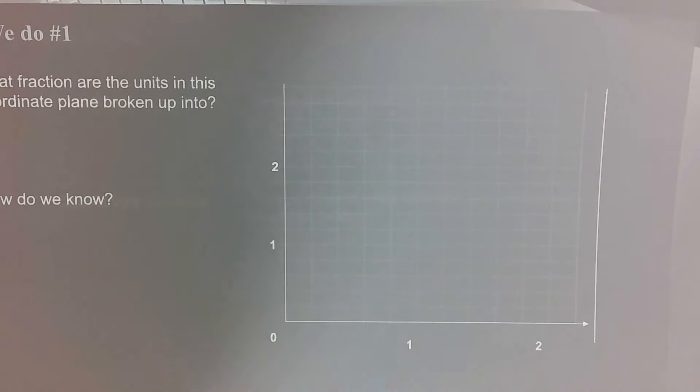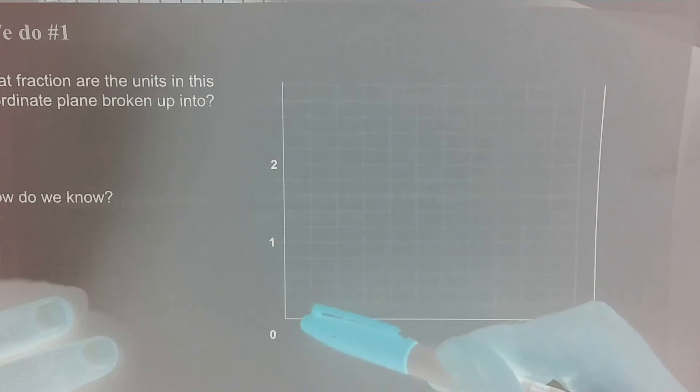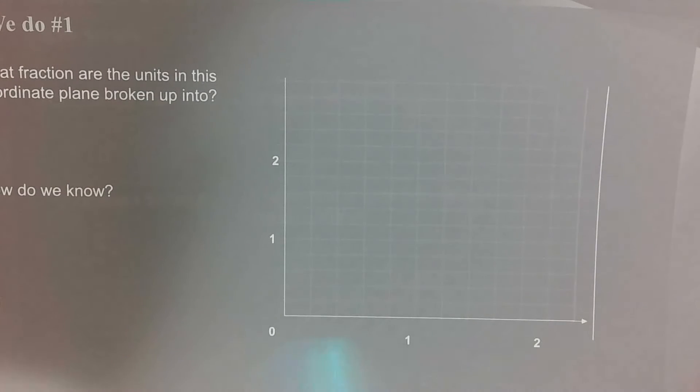Even like this coordinate grid, if each box is worth less than one like these are, there's one, two, three, four, five units until we get to one, it's still just one unit no matter what our axes are labeled.